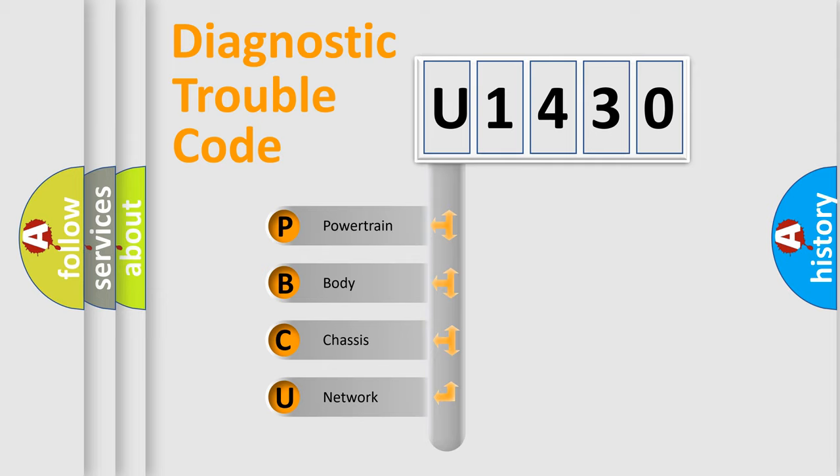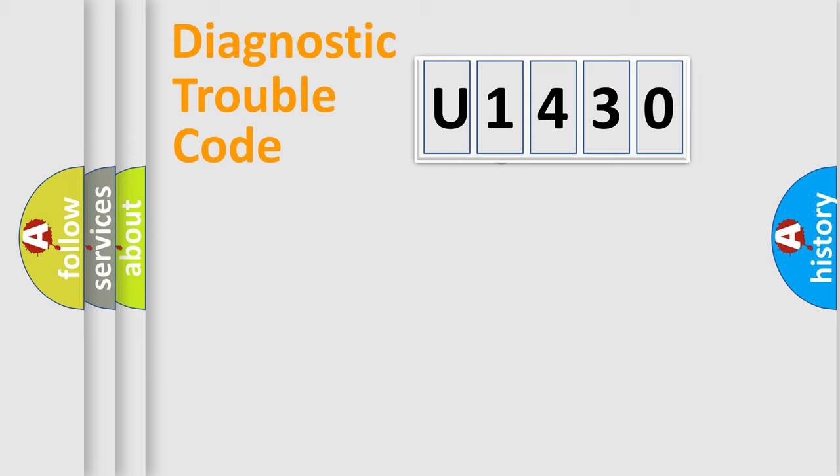We divide the electric system of automobile into four basic units: Powertrain, Body, Chassis, and Network. This distribution is defined in the first character code.